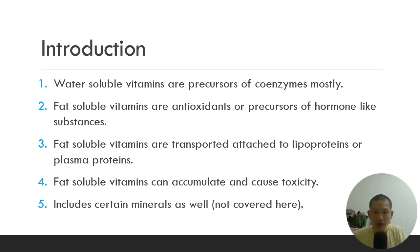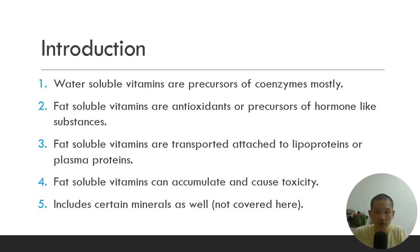Water soluble vitamins are mainly precursors of coenzymes. As covered in diabetes number five, coenzymes and enzymes work together for metabolic pathways. Precursor means vitamins will be transformed into coenzymes in the body. Fat soluble vitamins, on the other hand, are antioxidants or precursors of hormone-like substances. Fat soluble vitamins are transported attached to lipoproteins or plasma proteins, whereas water soluble vitamins flow freely in the blood.